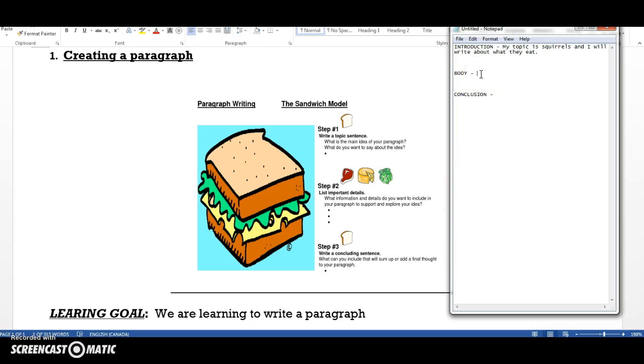Next, in the body you need to list the important details. What information and details do you want to include in your paragraph to support and explore your idea. So, if you're writing about squirrels and what they eat, you would say something like this.